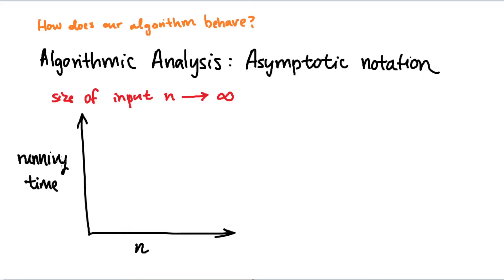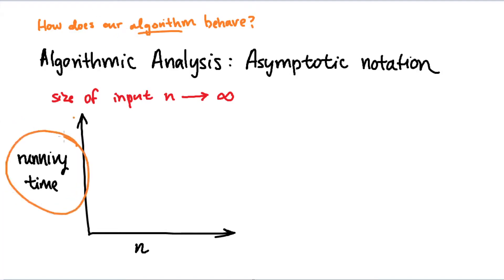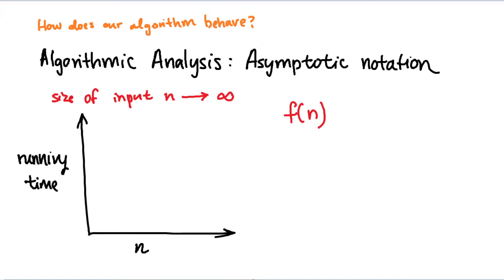The running time is a useful way of analyzing how your algorithm will behave, in the sense that we can consider how long it takes for this algorithm to run through and process all the data. We can describe the running time in terms of your input using some function f of n.